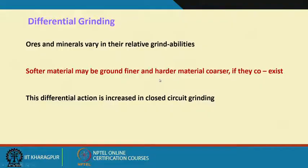Softer materials may be ground finer and harder materials coarser if they coexist; this differential action is increased in closed circuit grinding. In closed circuit, the softer particles are already finer than desired and exit the system, while only relatively harder materials are recycled back. After a certain point the grinding mill becomes overcrowded by harder materials and the recycling load keeps increasing. So the new feed rate must be controlled due to accumulation of relatively harder materials.